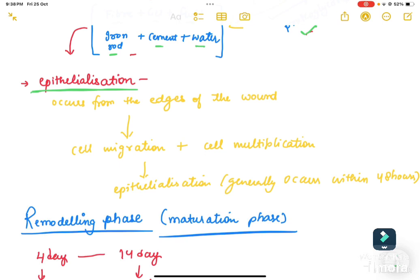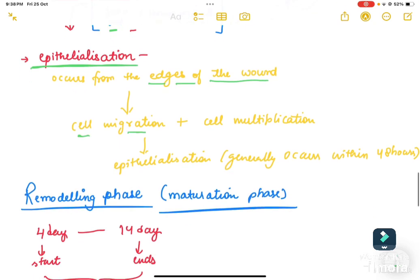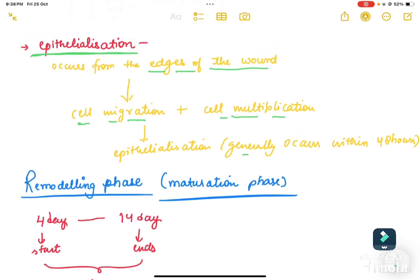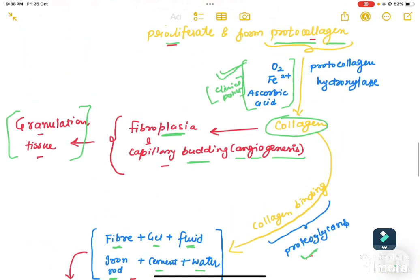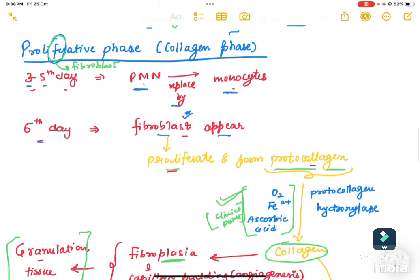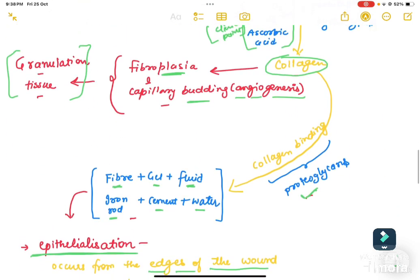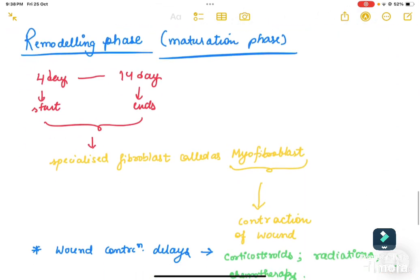An important point: new skin formation or epithelialization starts from the edges of the wound, not from the center. Cell migration and cell multiplication occur more rapidly at the edges, leading to epithelialization, which generally occurs within 48 hours. The key activities in the second phase are fibroblast activity, granulation tissue formation, and epithelialization.